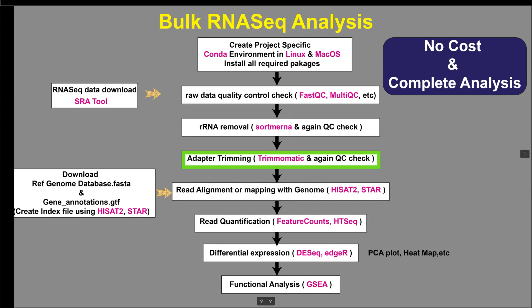Trimmomatic is a tool for trimming and filtering Illumina sequencing data, removing low quality bases and adapter sequences to improve the quality of the data for downstream analysis.